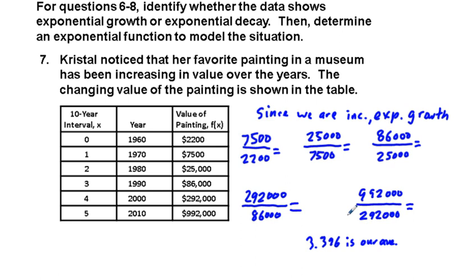So it says determine an exponential function. We can start with our initial value. F of x, our initial value is 2200 times 3.396 to the power of x. And if we let x equal 0, we have 2200 times 1 to get that. So this should hold and it's of the form y equals initial value times the base to the power of x. That's this form of equation.